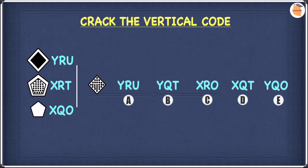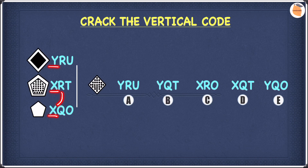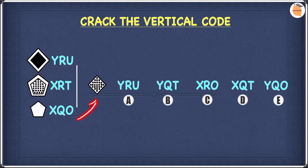Let's have a look at the next example. In this example, rather than two-letter codes we have three-letter codes — other than that we're going to do the same thing. Let's look at the first letter, which is Y, X and X. We have two of the same letter, which means there's something common between those two shapes. The only thing that's common is the shape itself — they're both pentagons, so X must mean pentagon and Y must mean diamond. On the right hand side we have a diamond, so our shape must start with Y. We can cross off C and D since they start with X, not Y.